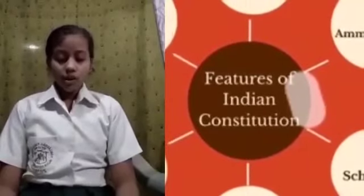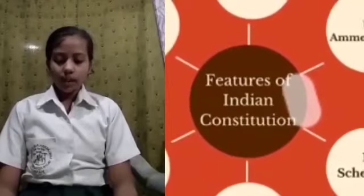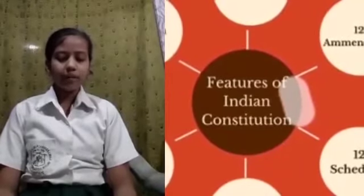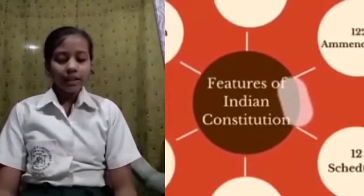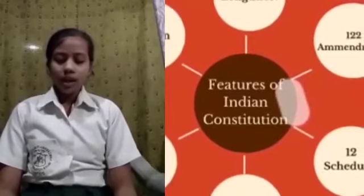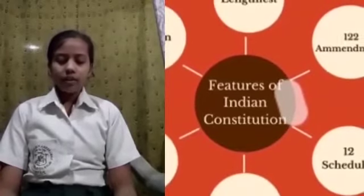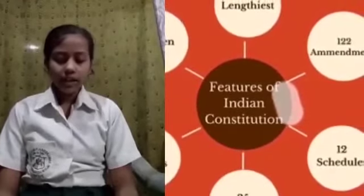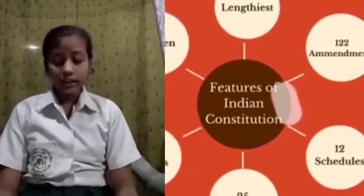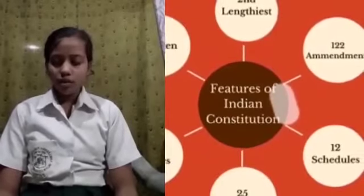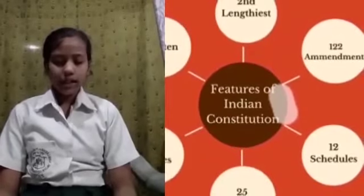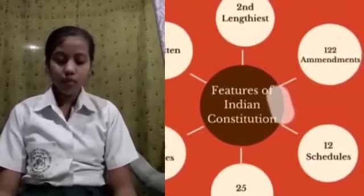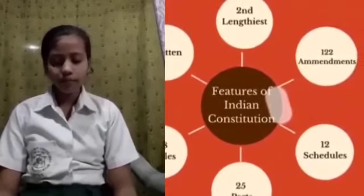The Constitution declares India to be a secular, socialist and a democratic republic. At the same time, India has federal features. The power of government is divided between the central government and the state government. The Constitution of India guarantees fundamental rights, meaning that the Indian Constitution provides an elaborate list of them.